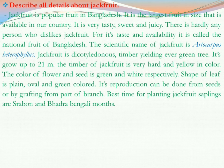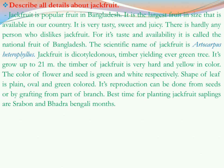The scientific name of jackfruit is Artocarpus heterophilus. If you see, I have written the scientific name in a slanted or italic formation. This is the rule of writing scientific names. I think you know from your science book how to write the scientific names of anything. That is why I have written it in italic form.